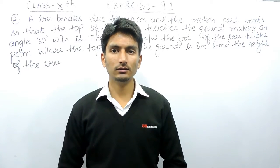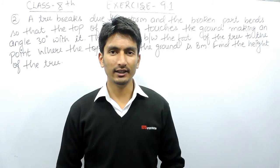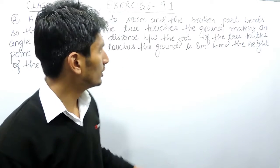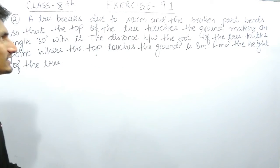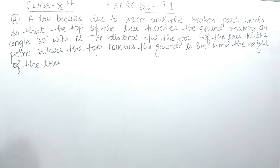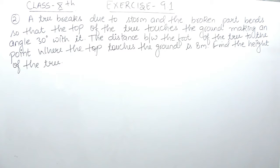Hello everyone, we are from True Math and in this video we are going to solve question number 2 of exercise 9.1. The question says: a tree breaks due to a storm and the broken part bends so that the top of the tree touches the ground making an angle of 30 degrees. The distance between the foot of the tree and the point where the top touches the ground is 8 meters. You have to find the height of the tree.